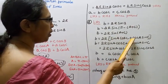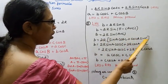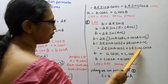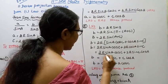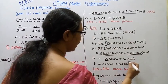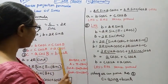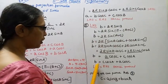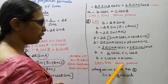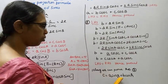Expanding sin(A + C) = sin A cos C + cos A sin C. So b = 2R sin A cos C + 2R cos A sin C. Since a = 2R sin A and c = 2R sin C, we get b = a cos C + c cos A, which equals c cos A + a cos C. Left hand side equals right hand side. Second projection formula is proved.